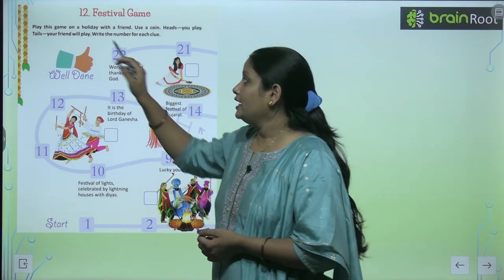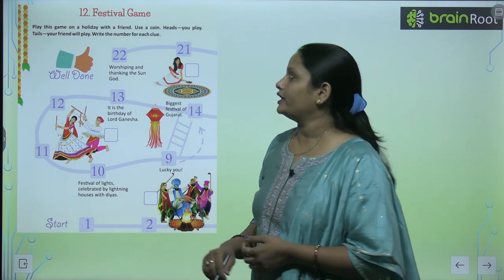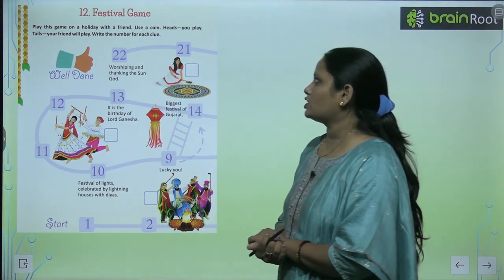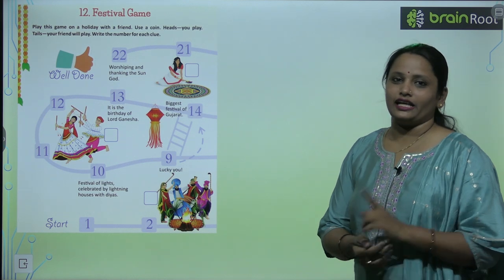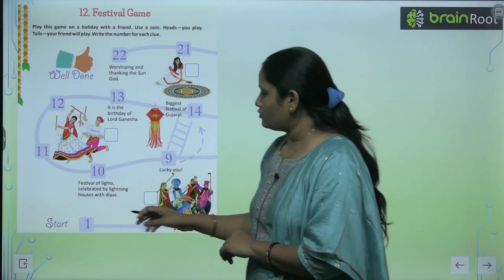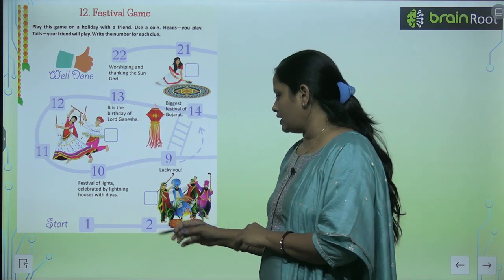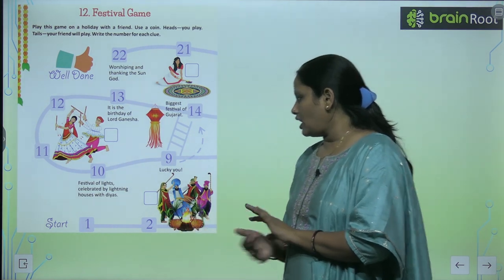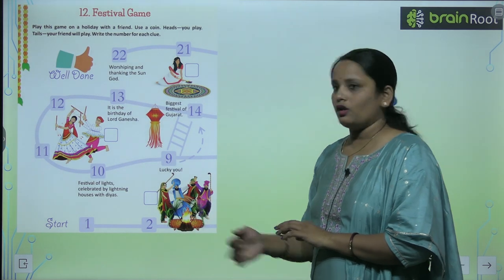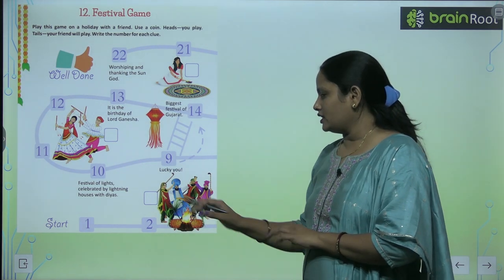Head you play — agar head aata hai to aap khelenge. Tails your friend will play — tail aega to aapka friend kheleega. Write the number for each clue — har ek clue ke liye number dena hai. You have to start from one, so one se start karenge.